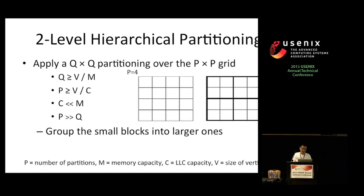The two-level hierarchical partitioning is the answer. We introduced a new parameter Q, which is decided based on the size of vertices and the memory capacity. P is determined according to the size of vertices and the capacity of last-level cache. So, we can see that P is often much larger than Q. We first partition the edges into a fine-grained P times P grid, and then group the small blocks into larger ones to form the Q times Q grid. Here we show an example of P equals 4 and Q equals 2. By doing this, we can achieve not only the good properties of both coarse-grained and fine-grained partitioning, but also make our system adapt to the three-level memory hierarchy.